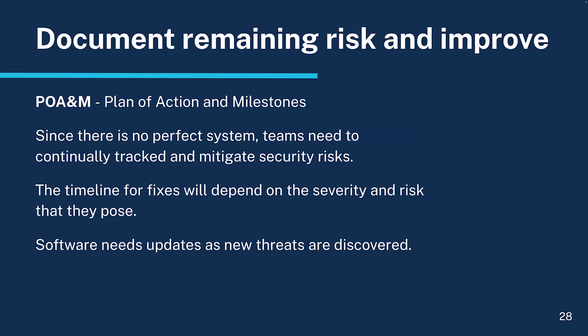Document the remaining risk and improve. Your agency's security team usually supports projects for things like security scans and alerts when software is using something dangerously out of date. When those issues come up, it's the system owner's responsibility to make sure software risks are addressed in a timely manner. The agency's security team will work with the system owner to document risks in a Plan of Actions and Milestones, or POAM. This records when software needs to be updated and when updates are complete. Since there's no perfect system, teams need to continually track and mitigate security risks as new threats are discovered.